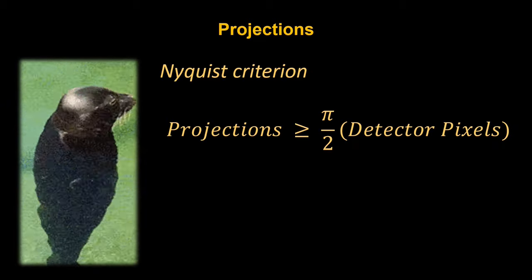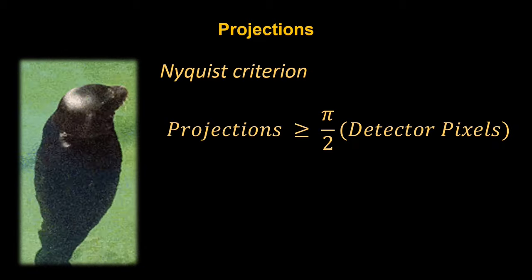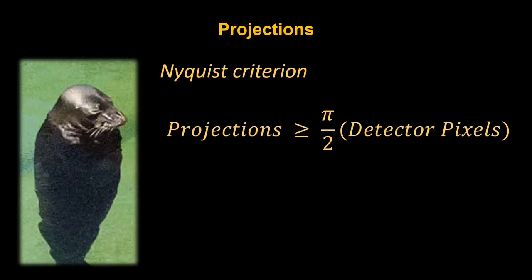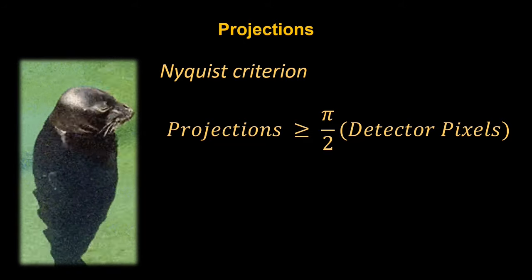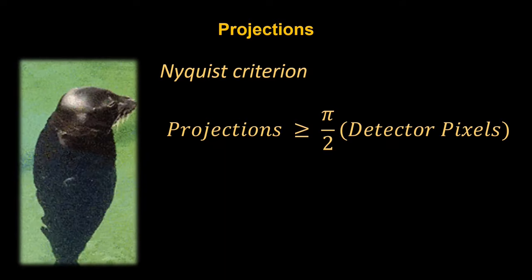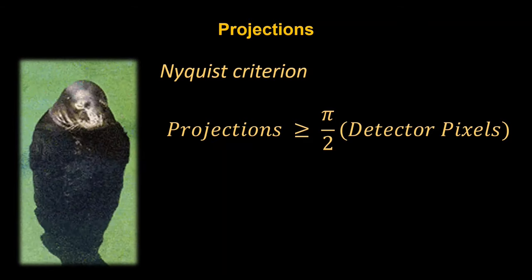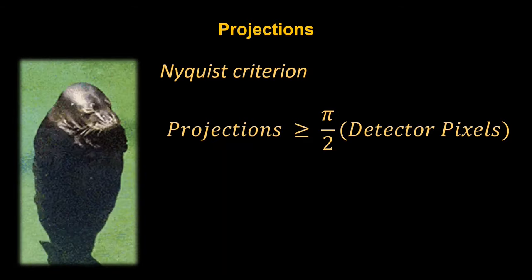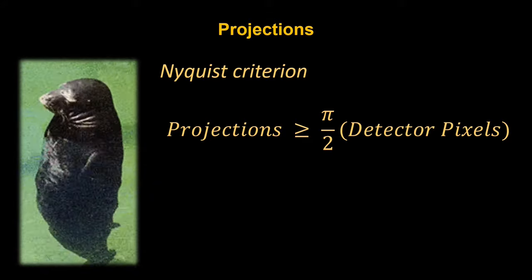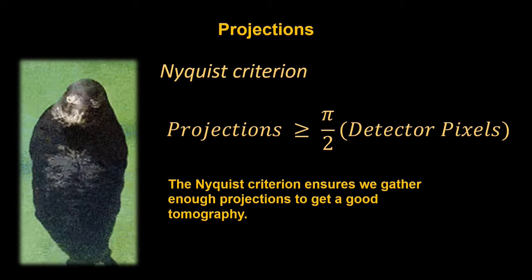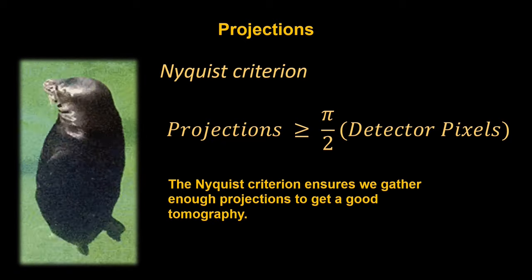And for that, I have another rule of thumb, the Nyquist criterion. The Nyquist criterion describes a relationship between the detector size and the amount of projections that we have to gather. The Nyquist criterion states that the number of projections we gather should be greater than or equal to π/2 multiplied by the detector pixels in the horizontal direction. For the Nikon, this is about 2,000 pixels that we multiply by π/2, giving us 1,000 multiplied by π, which would be 3,141 projections that we would gather to get an optimized tomography.